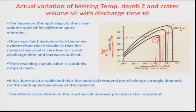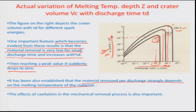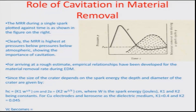One important feature evident from these results is that material removal is very low for small discharge time and increases with Td, reaching a peak value before suddenly dropping to zero. It has also been established that material removed per discharge strongly depends on the melting temperature of the material, and the effects of cavitation in the mechanical removal process are also very important.